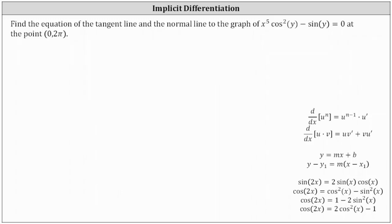We're asked to find the equation of the tangent line and normal line to the graph of x to the fifth cosine squared y minus sine y equals zero at the point zero comma two pi. We'll first have to perform implicit differentiation to determine dy/dx using the given equation. Then we'll determine the value of dy/dx at the given point, which will give us the slope of the tangent line. From there, we can determine the equation of the tangent line and then the equation of the normal line.